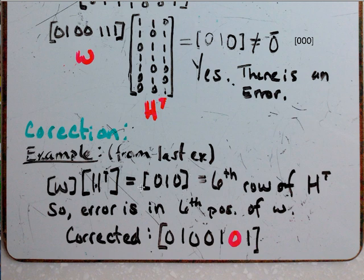What we found was that this times this was equal to 0, 1, 0, which is the sixth row of H transpose. You can see that right here. 0, 1, 0. 1, 2, 3, 4, 5, 6th row. Therefore, the error is in the sixth position of w.